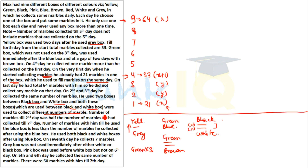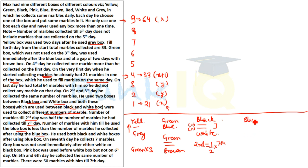Condition 9: The number of marbles till the second day was half the number of marbles collected till the seventh day. So marbles up to day 2 = half of marbles up to day 7. Condition 10: The number of marbles with him till he used the blue box is less than the number of marbles collected after using the blue box.